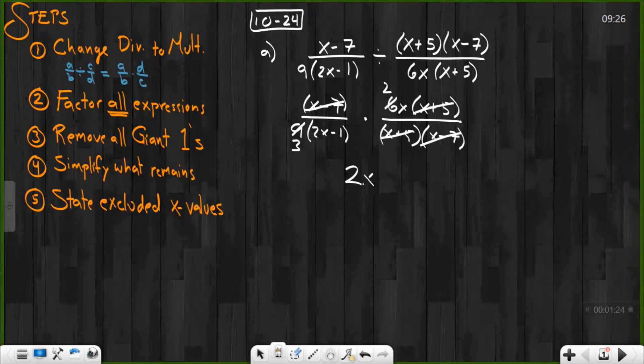What remains on top at this point is just 2 times x. What remains on the bottom is 3 and the group 2x minus 1. I've got to distribute, giving me 6x minus 3 on the bottom. Don't forget to state your excluded values of x.